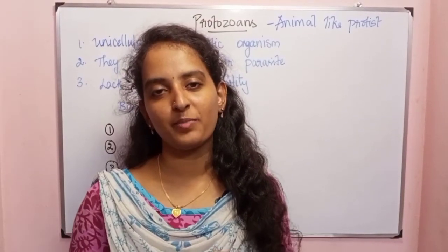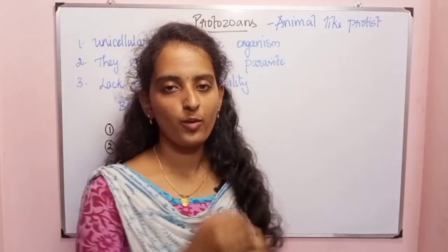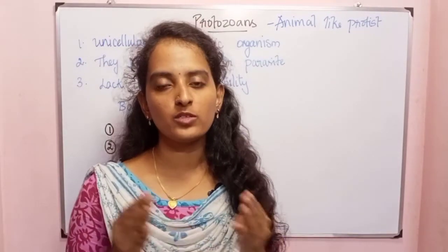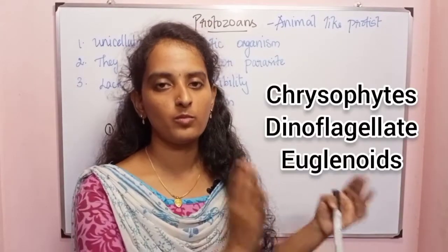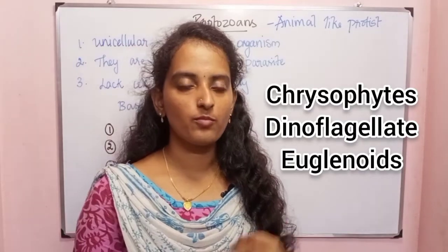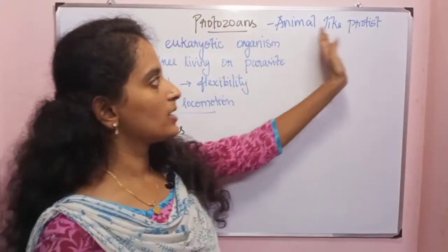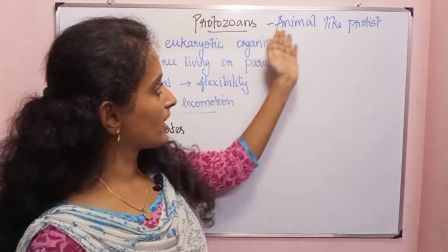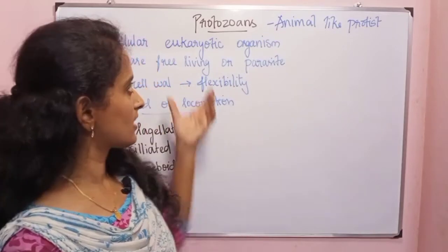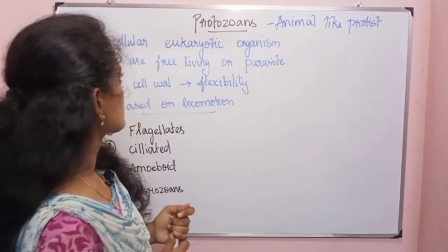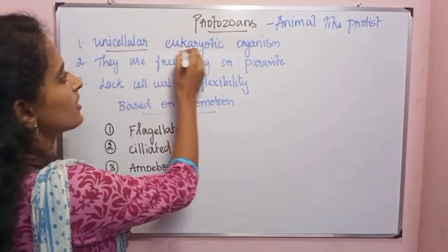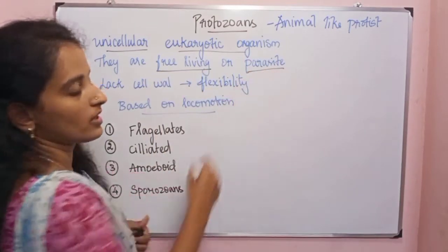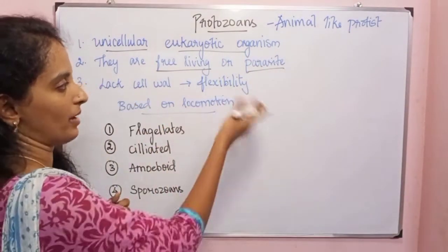Hi guys, welcome to DDSPYDACHI. Let's talk about protozoans. In the previous video we talked about slime molds. Slime molds and protozoans are non-photosynthetic protests, whereas these are photosynthetic protests. Protozoans are animal-like protests — unicellular eukaryotic organisms. They can be free-living or parasitic.